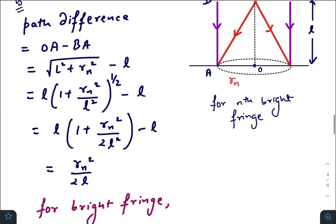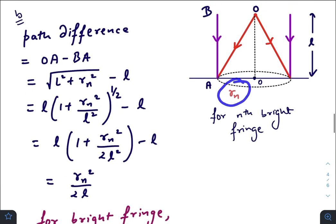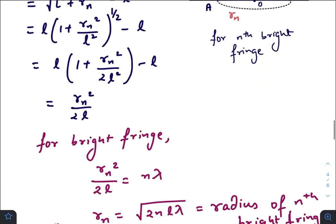We will get the final expression for path difference which is nearly equals to r_n squared by 2L, where r_n is the radius of the nth bright fringe. So for bright fringe, of course, this path difference should be equal to n lambda.